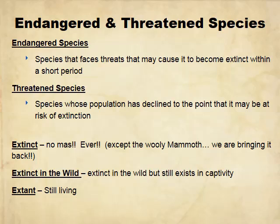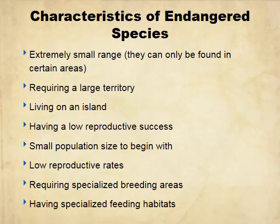Moving toward what we'll be doing on Thursday: endangered and threatened species, extinctions, extinct in the wild, and extant — these are vocab words. Some characteristics make species more prone to becoming endangered: an extremely small range, being endemic (only found in one specific area), or living on an island. Endemic species only exist in that one area — like the dodo bird, which only existed on the island of Mauritius. Once gone from there, they couldn't migrate in from anywhere else.